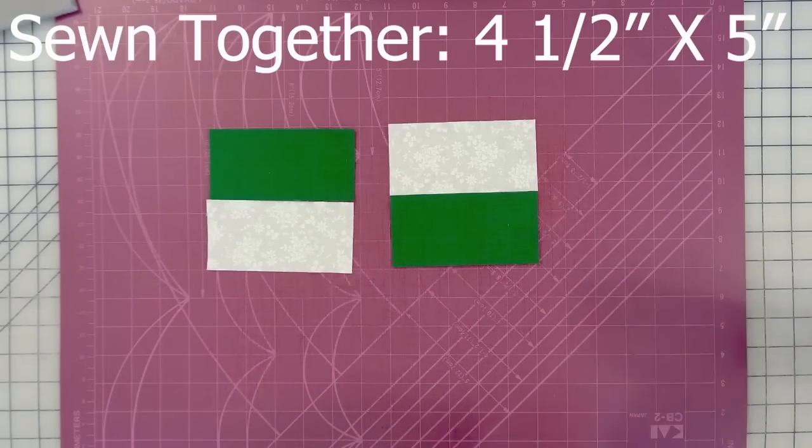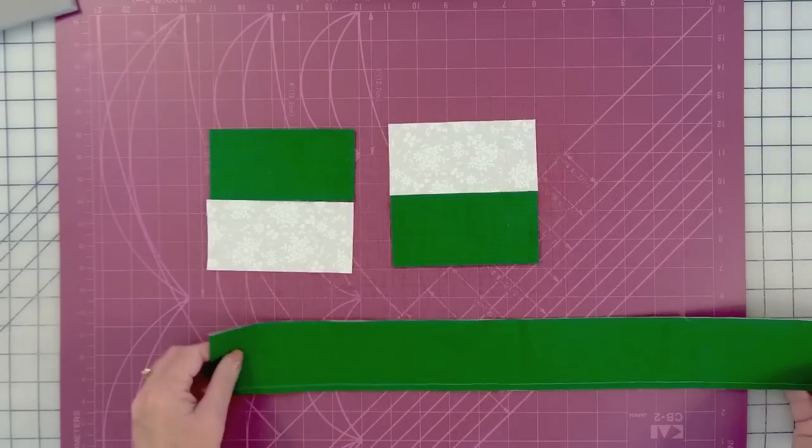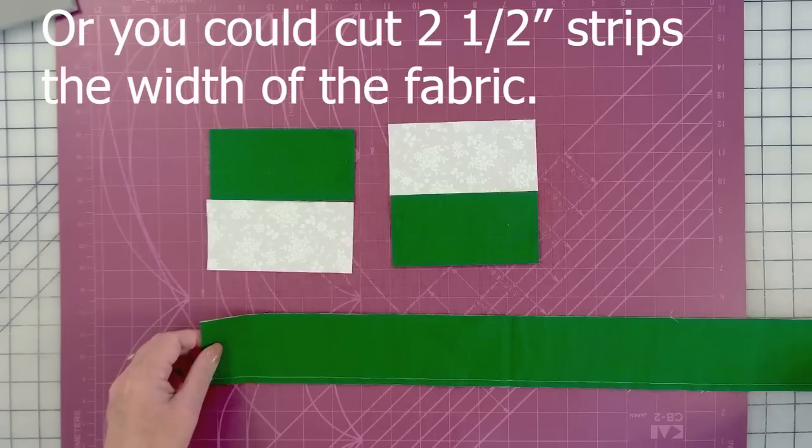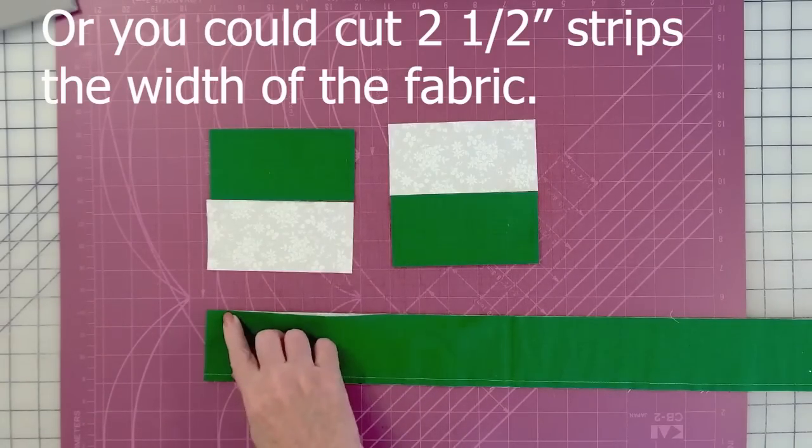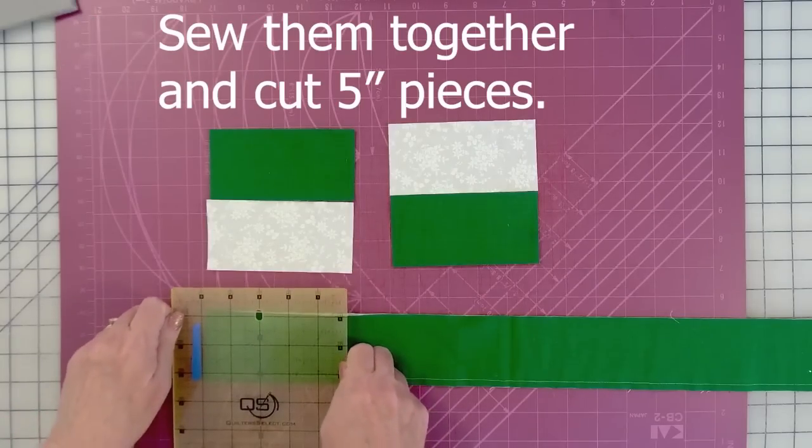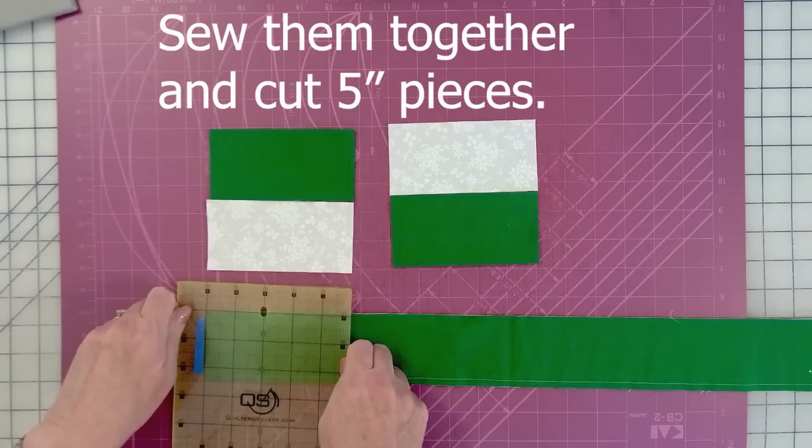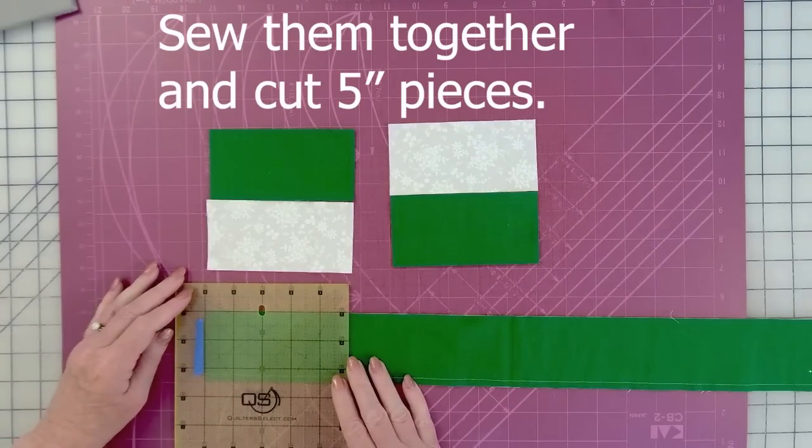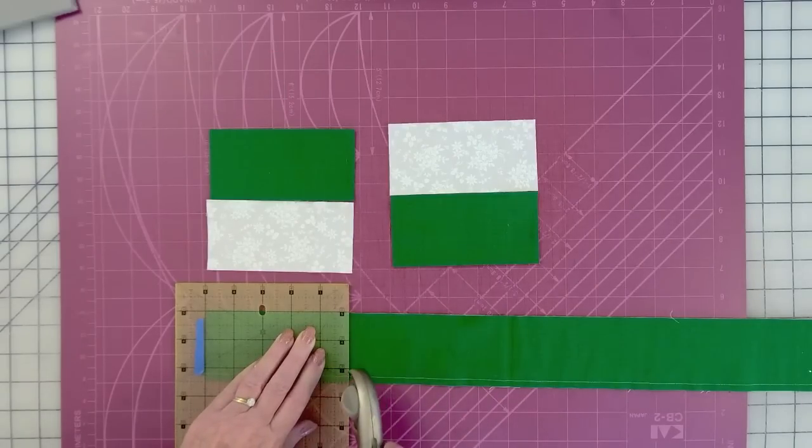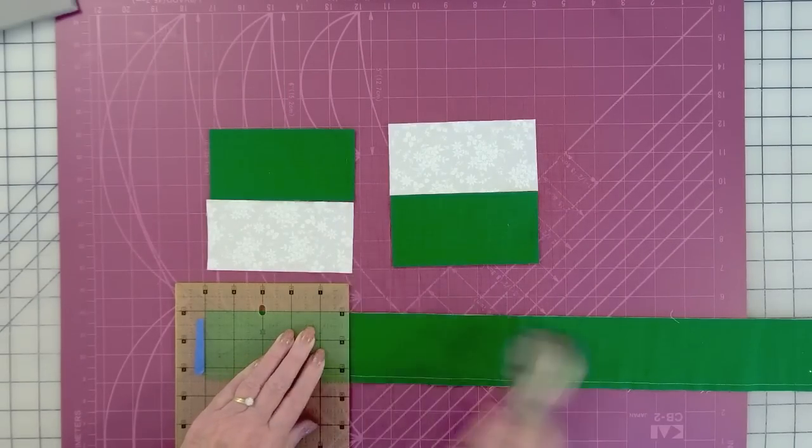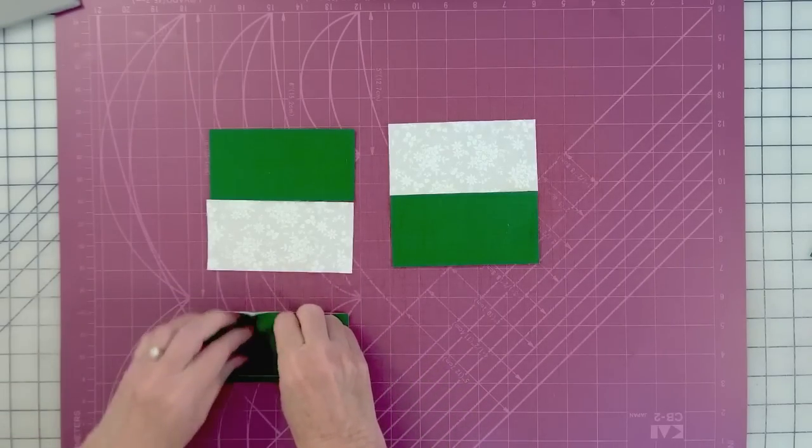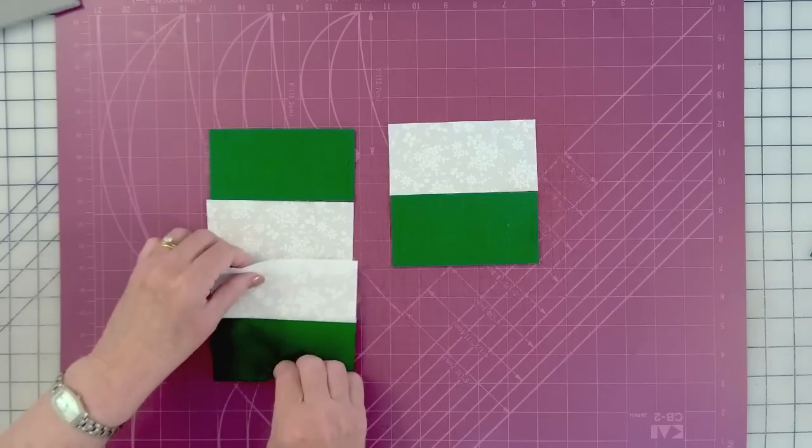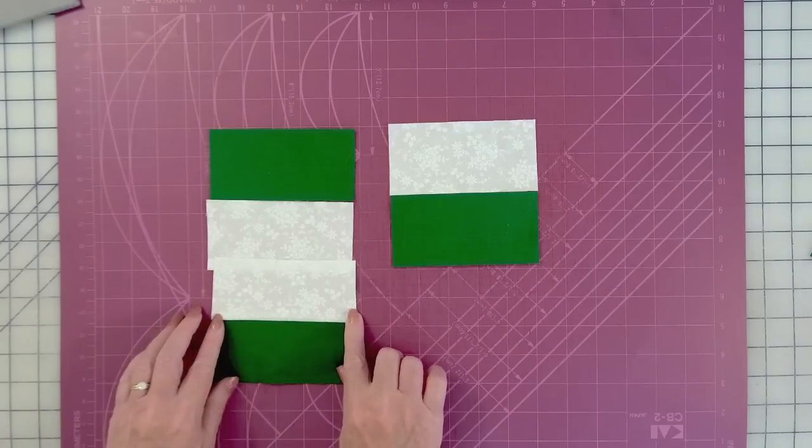Alternately, if you're not doing charms, if you're doing yardage, you can cut strips of fabric that are two and a half inches wide, one white, one green, sew them together, and then you can cut a five inch piece. Open it up, press it to the dark, and you have a rectangle block.